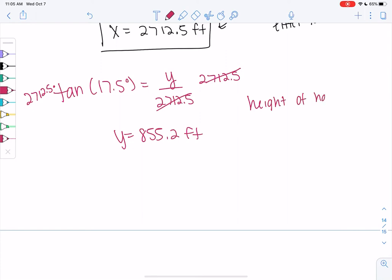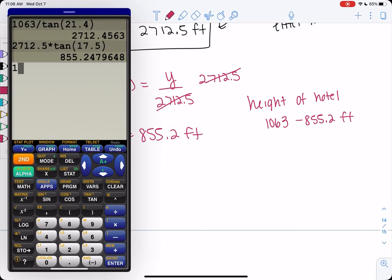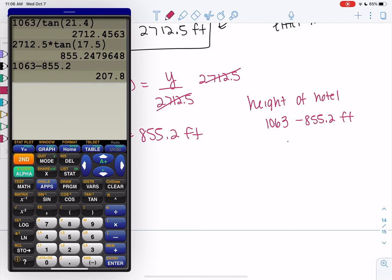If you did not have a picture on this one, it would be almost impossible. 1063 was the whole Eiffel Tower. We'll subtract that top piece. And the difference is the height of the hotel. And we get about 207.8 feet.